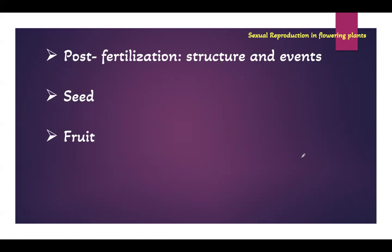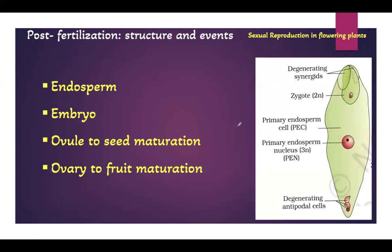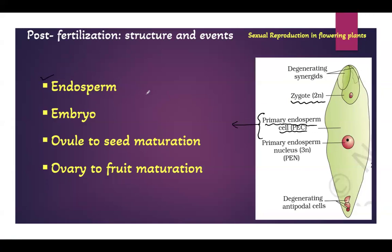In our last class we have seen how fertilization happens and after fertilization what has formed. After fertilization, zygote has formed due to syngamy and primary endosperm cell has formed due to triple fusion. The primary endosperm cell when it undergoes multiple mitotic divisions will form endosperm, which is a nutritive tissue for the developing embryo.